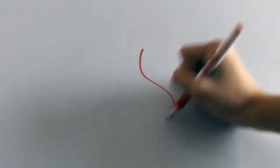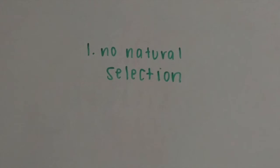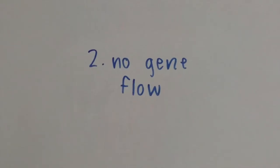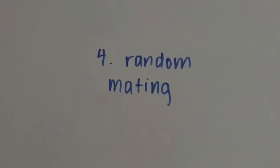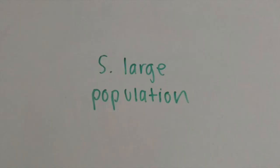There are five factors that keep a population in Hardy-Weinberg equilibrium, and these are no natural selection, no gene flow, no mutations, random mating, and a large population.